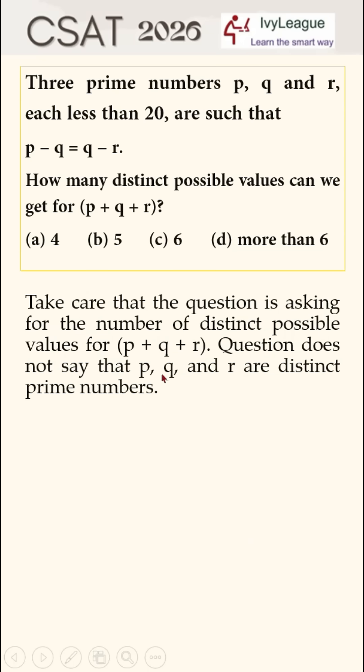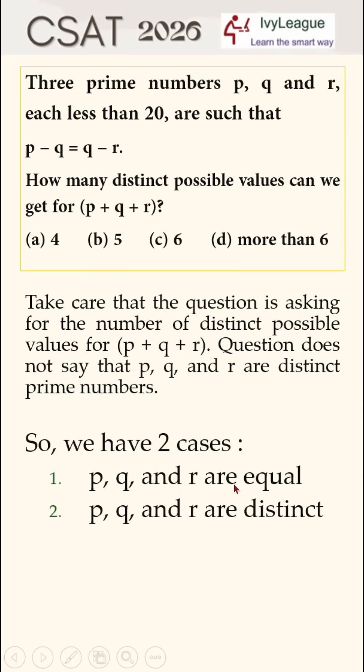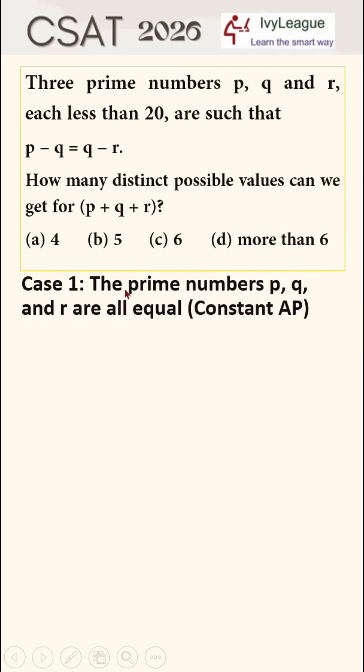The question does not say that p, q, and r are distinct prime numbers, so we actually have two cases. P, q, and r can be same and equal, or p, q, and r can be distinct and different. Let's look at case number one where prime numbers p, q, and r are all equal, and this is a case of constant AP.